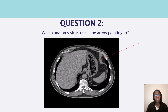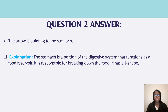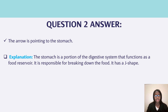Question two, which anatomy structure is the arrow pointing to? The arrow is pointing to the stomach. The stomach is a portion of the digestive system that functions as a food reservoir. It is responsible for breaking down the food. It has a J shape. If I'm going too fast, you can always pause the video if you need more time to read the information.